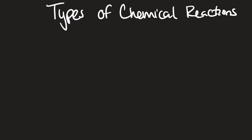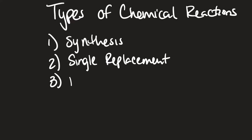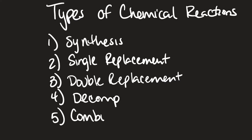In this video we're going to look at five different types of chemical reactions, and just the key features of each type so that when you are given a chemical reaction you can easily identify them. The five types are: synthesis, single replacement, double replacement, decomposition, and combustion.